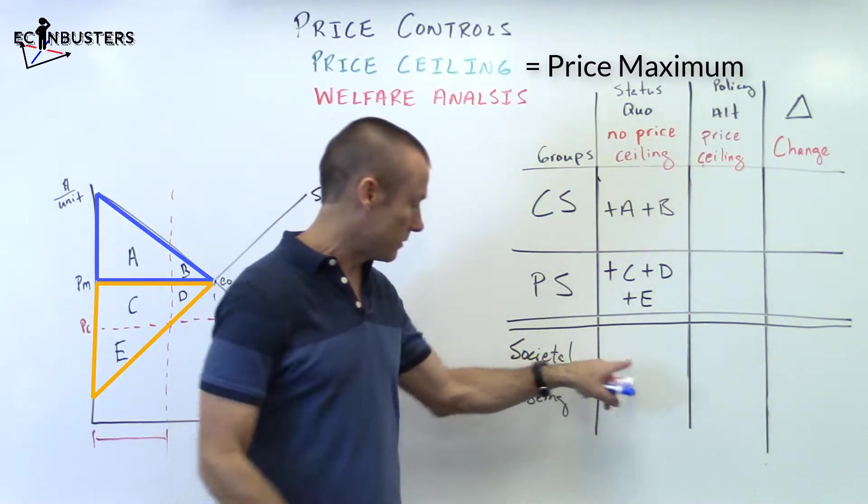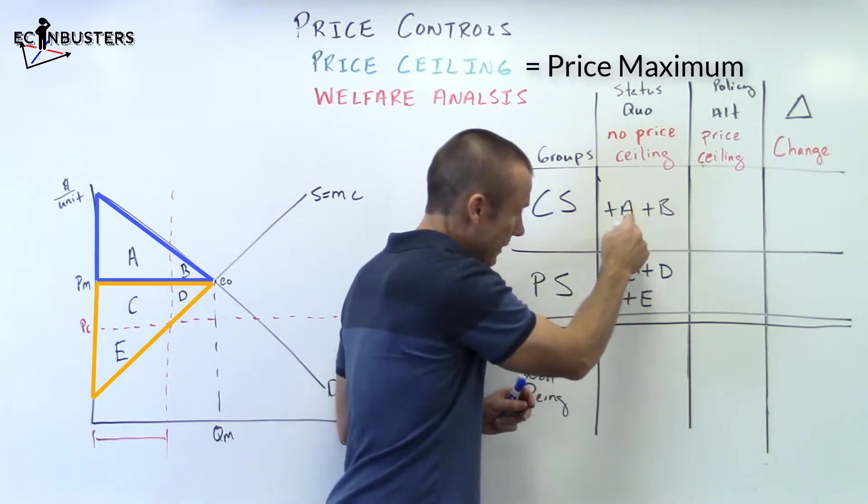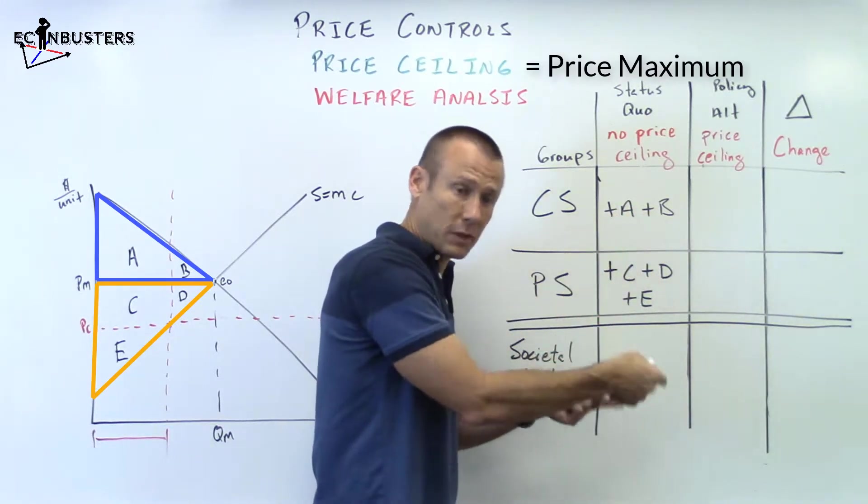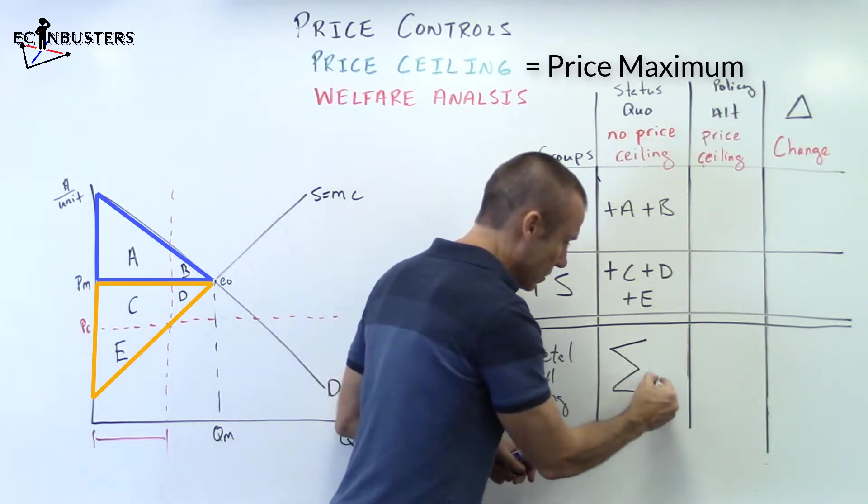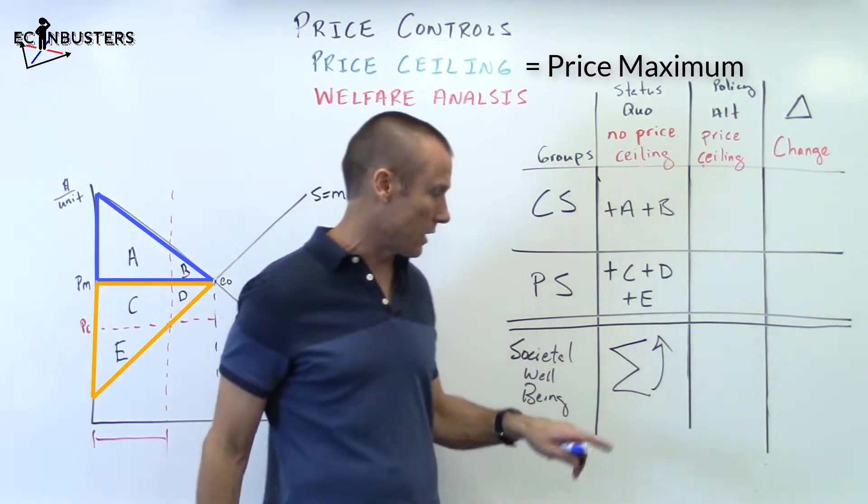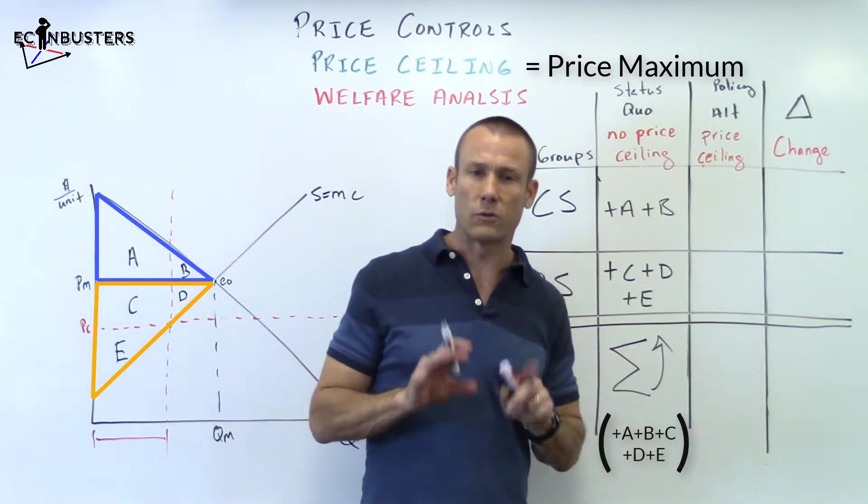Now, what we could do right here is, since it's society for no price ceiling, we could just write A plus B plus C plus D plus E, just sum it up. But it's just simpler just to do this: sigma, point up. You're going to notice we don't really have to fill that in for what we're going to try to accomplish here.